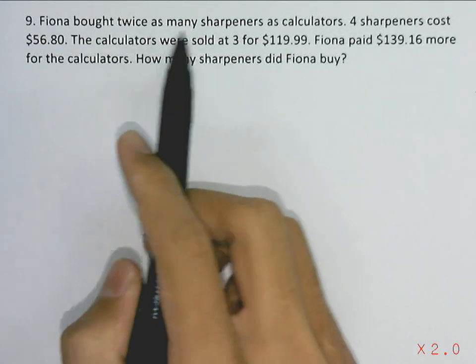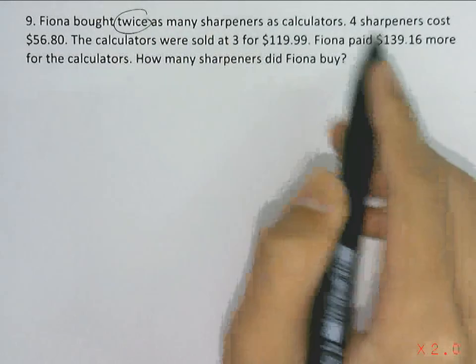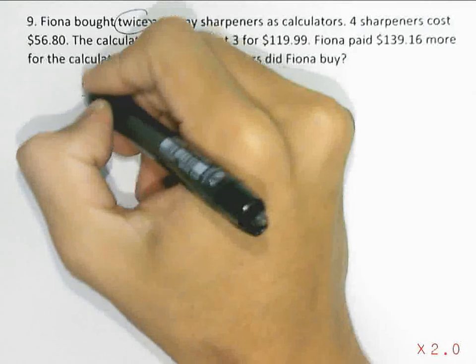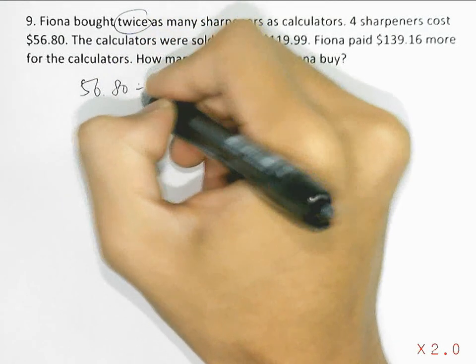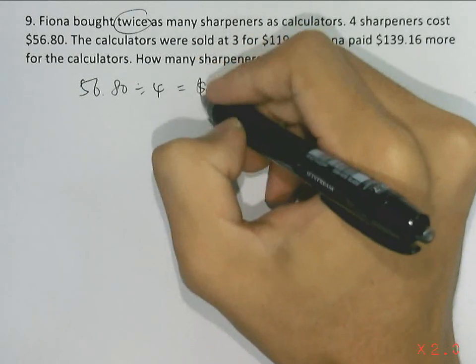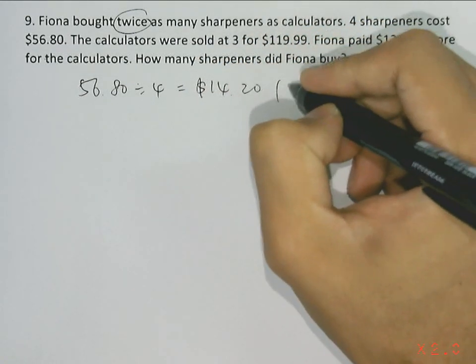Fiona bought twice as many sharpeners as calculators. Four sharpeners cost $56.80, so from here we can first find the cost of one sharpener by taking $56.80 dividing by 4. That gives us $14.20, which is the cost of one sharpener.